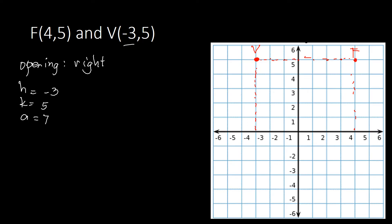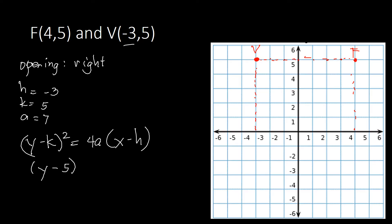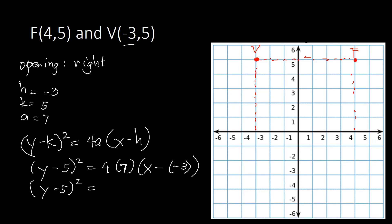Since the parabola opens to the right, the standard equation is (y − k)² = 4a(x − h). Plugging in: (y − 5)² = 4(7)(x − (−3)), which simplifies to (y − 5)² = 28(x + 3). That is our standard equation of the parabola.